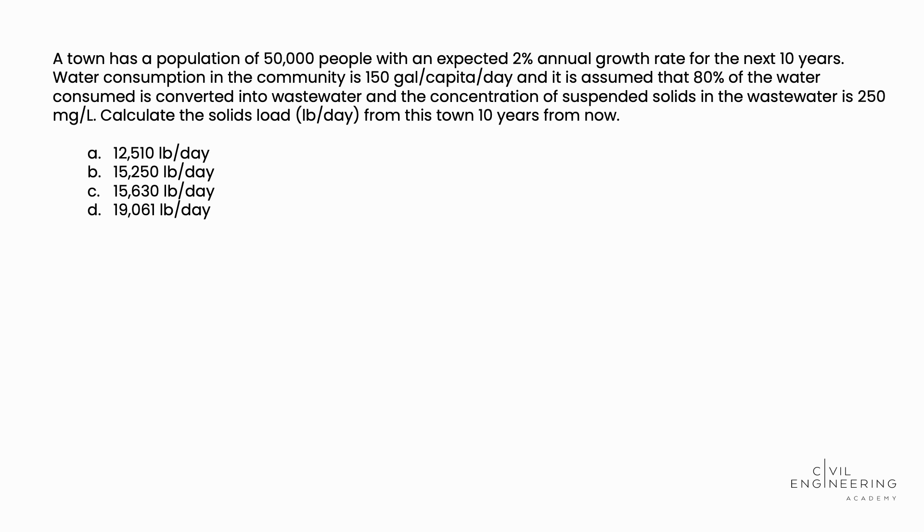A town has a population of 50,000 people with an expected 2% annual growth rate for the next 10 years. Water consumption in the community is 150 gallons per capita per day and it is assumed that 80% of the water consumed is converted into wastewater and the concentration of suspended solids in the wastewater is 250 milligrams per liter. Calculate the solids load in pounds per day from this town 10 years from now.